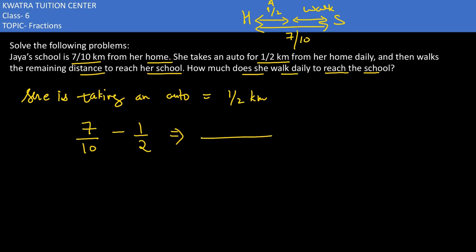So let's subtract it by taking the LCM. How much will it be? It will be 10. And you will multiply it from 2. You will be multiplying it with 5. So 7 is there. 1 into 5 is 5, which would become 2 by 10. And if you reduce it from 2 by 10, it would be 1 by 5 km.